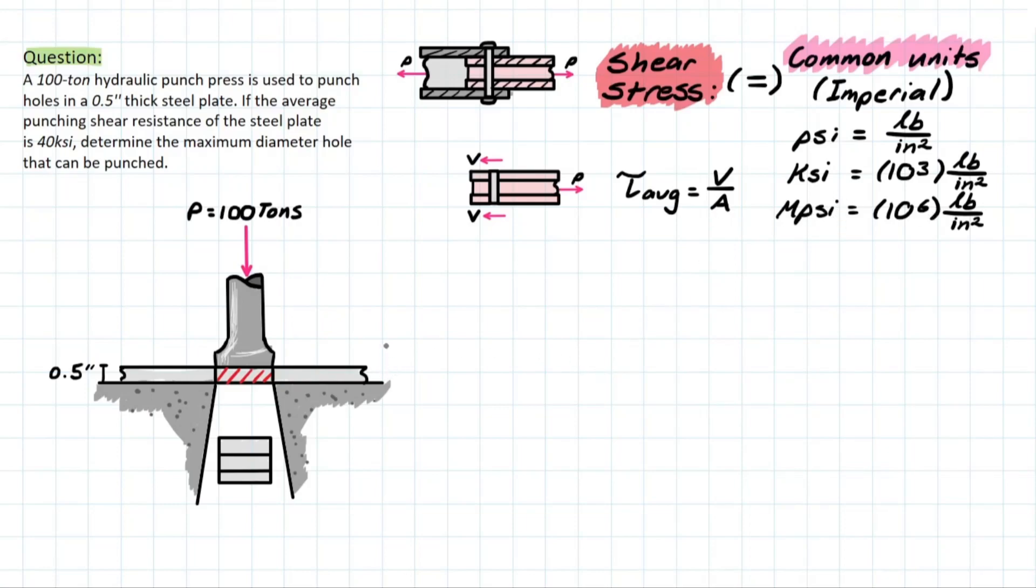Alright, so let's read this problem. Let's see what we're dealing with. We have a 100 ton hydraulic punch press, and it's used to punch holes in a 0.5 inch thick steel plate, which is right here. If the average punching shear resistance of the steel plate is 40 KSI, determine the maximum diameter hole that can be punched.